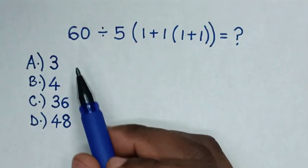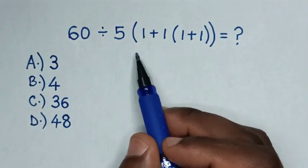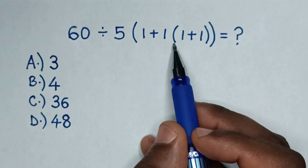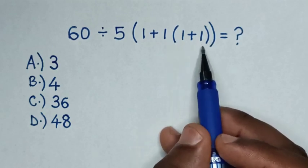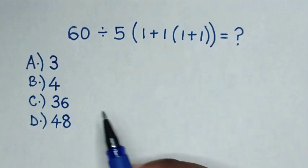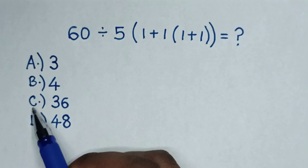Hello, how to solve 60 divided by 5 bracket 1 plus 1 bracket 1 plus 1 bracket bracket. Select the answers in A, B, C or D.